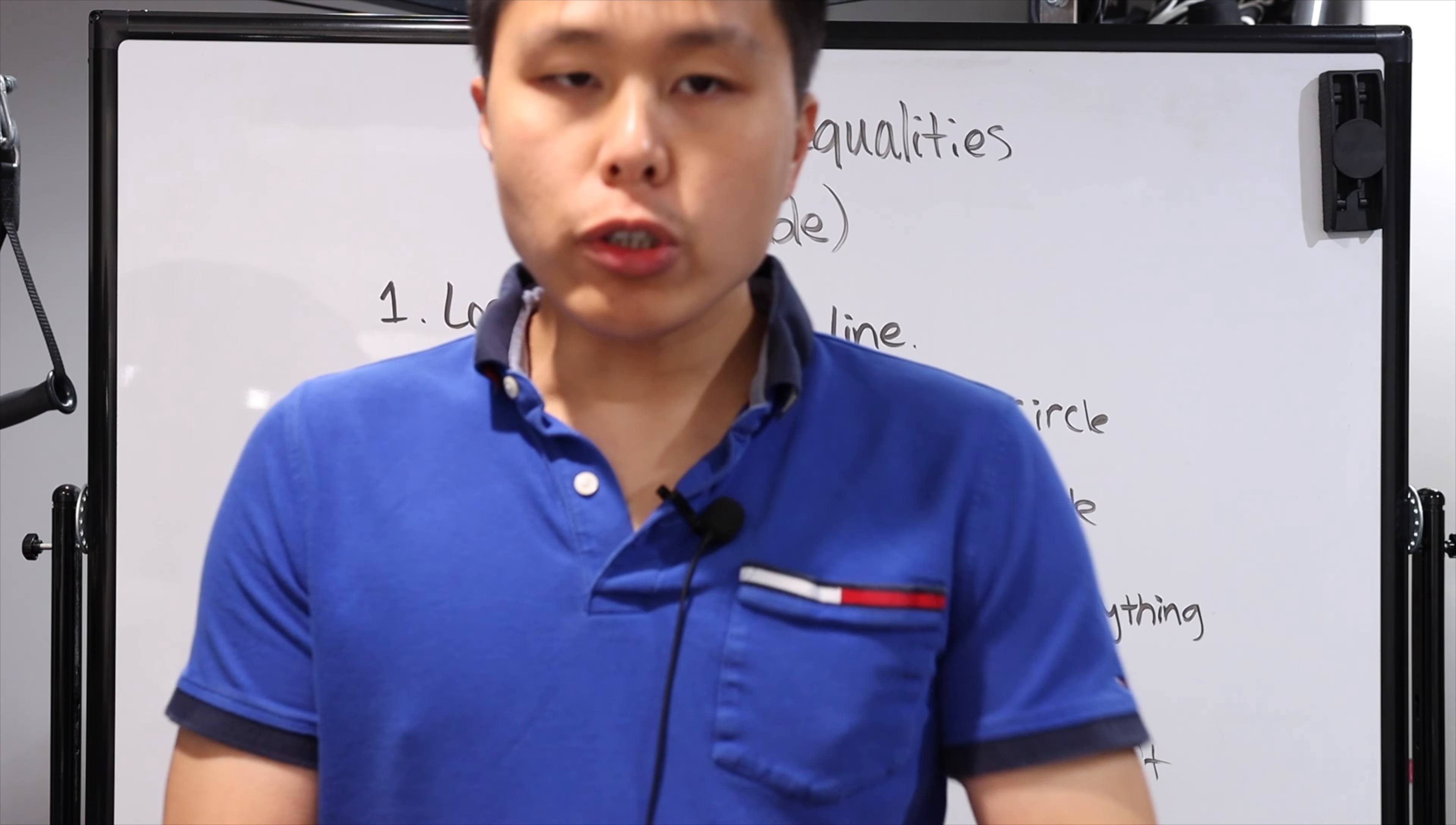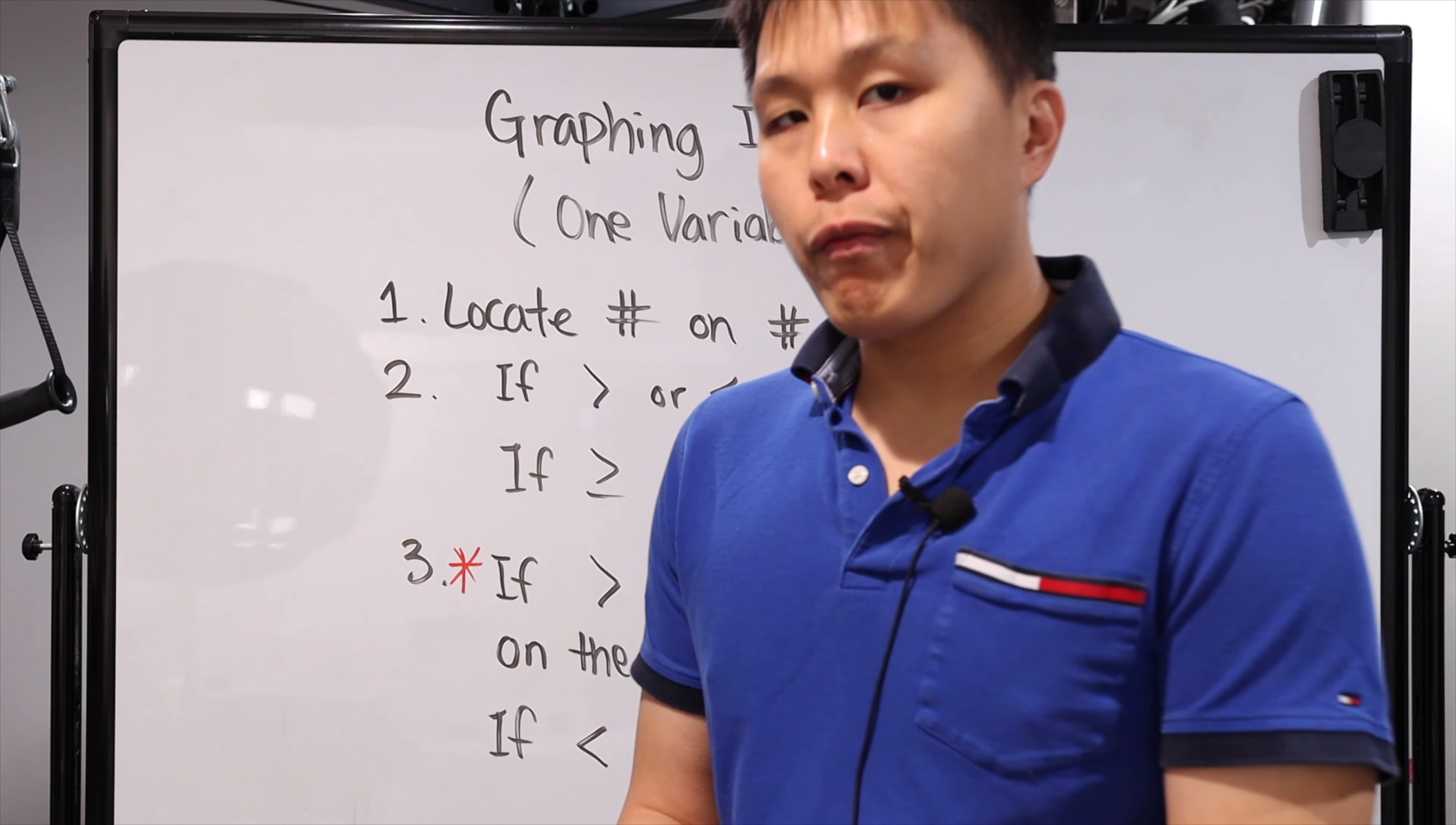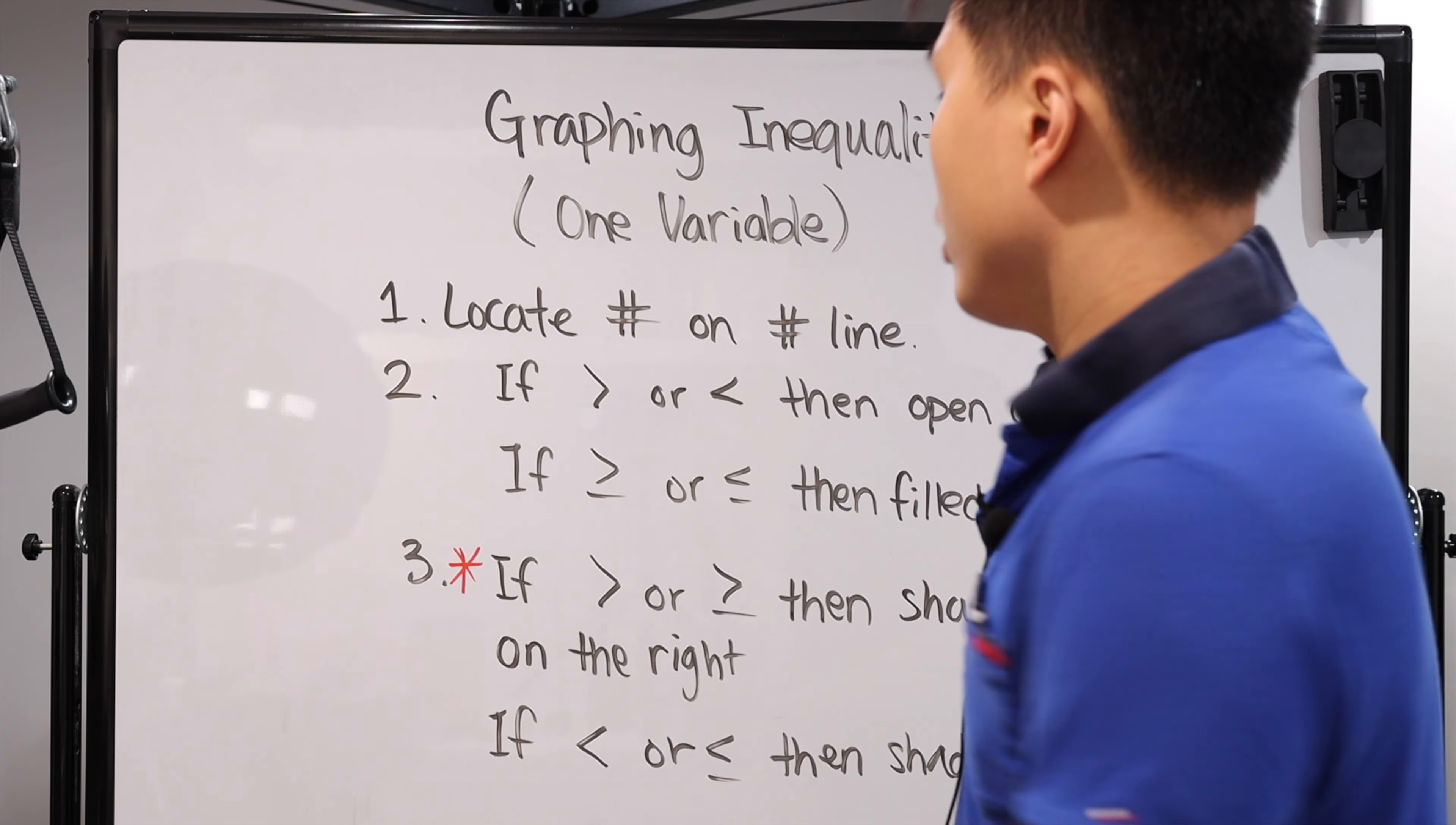All right, so in order to graph the inequalities, there's actually three steps with different potential cases. The first one is, when you're graphing inequalities with one variable, you're just working on a number line from zero, negative, positive. You're gonna locate the number on that number line, and then you're gonna fill it or mark it in some way.